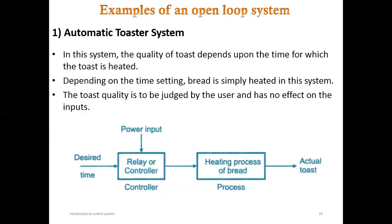An example of an open loop system is the automatic toaster. In today's toasters, there is a heating element with a knob from one to five or one to ten. If you put it on one, the toaster heats for 30 seconds; on two, 60 seconds; on three, 90 seconds. You have to check and eject the bread yourself so it does not overheat — the toaster does not check the quality of the bread.